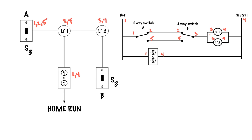Three-way switch B has got number three to the common, two to a traveler, and five to a traveler — so two, three, and five. And the last thing is the home run, which is my hot and my neutral, which is one and four.